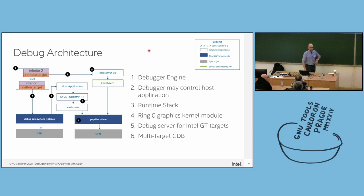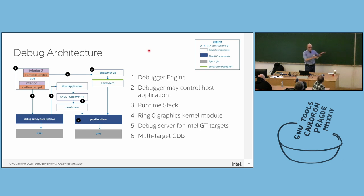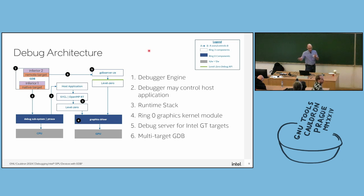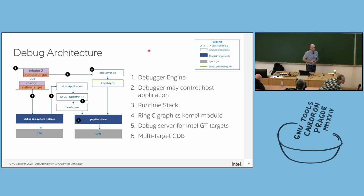Regarding the question about where JIT happens in this diagram — JIT happens at step three, inside the SYCL runtime. It's also possible to do ahead-of-time compilation, where you lower the intermediate representation SPIR-V to actual device code, which would be embedded in the FAT binary. In that case, the runtime would immediately load the already-compiled device code instead of invoking the JIT compiler. From the debugger point of view, it doesn't matter.